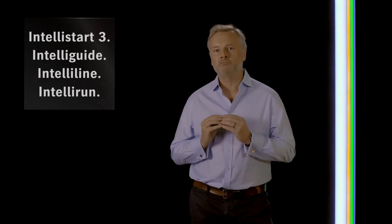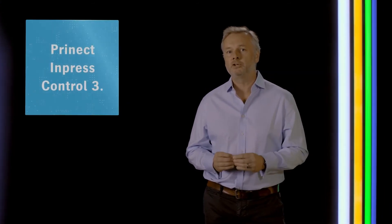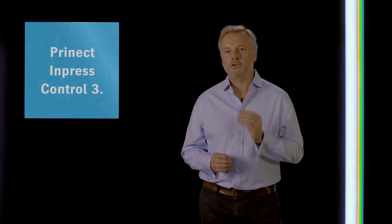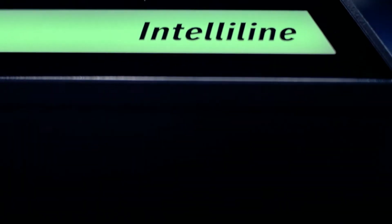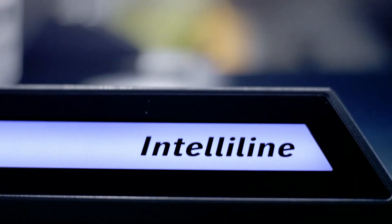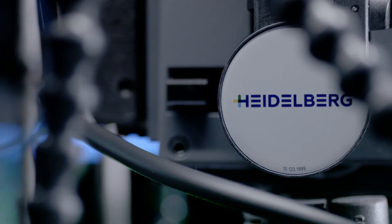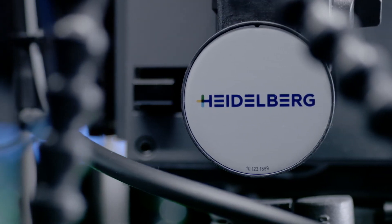The process always displays the most relevant information at the correct time. The Prinect Impress Control 3 photo-spectrometric inline color and register measuring system switches the press fully automatically to good sheet production as soon as the defined quality parameters are met.